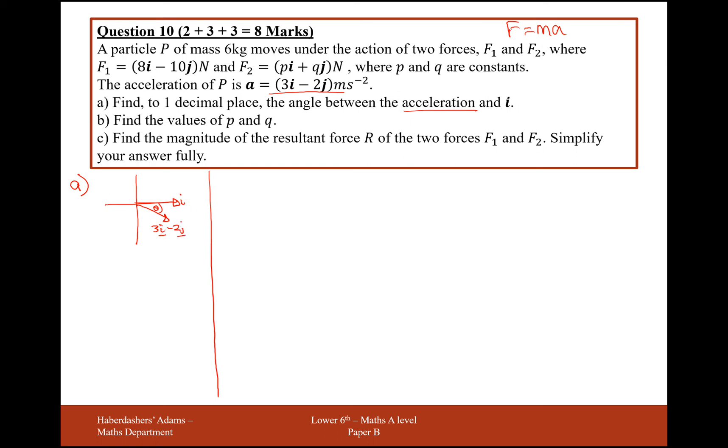3I, that'll make it go to the right, and minus 2J will make it go down. So from this diagram here, I can see I've got 3 to the right and 2 down inside a little right-angled triangle here.